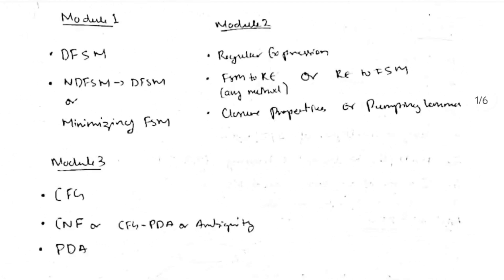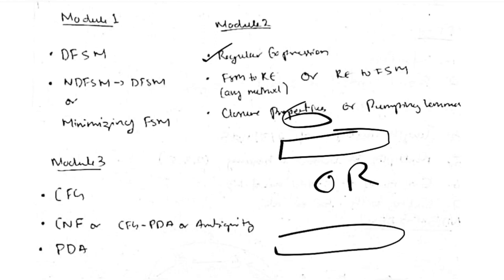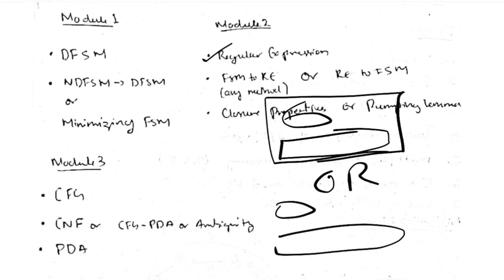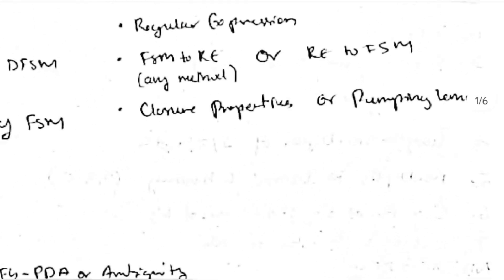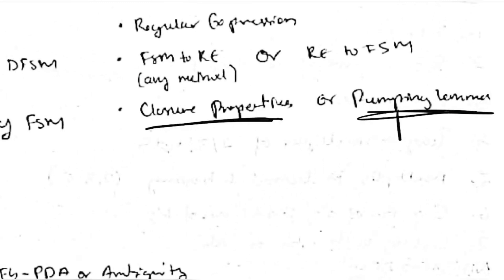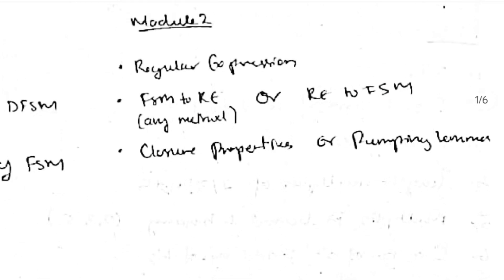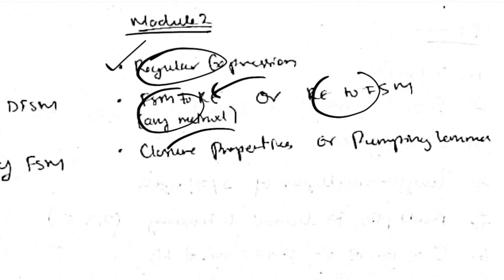In the question they'll specify which method to use — heuristic or standard — so knowing both is best, but one method is sufficient. For the last topic in Module 2, study either closure properties or pumping lemma. For closure properties, focus on union, concatenation, Kleene star, intersection, and reversal — these five are the most repeated. Studying all five is ideal as they come in combinations.